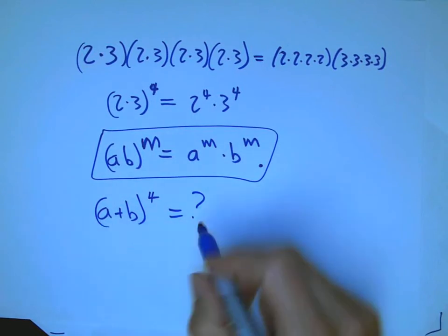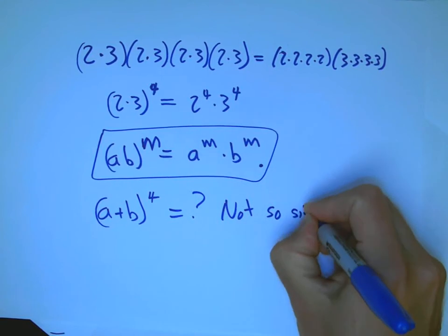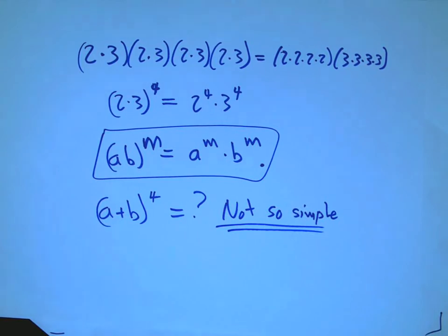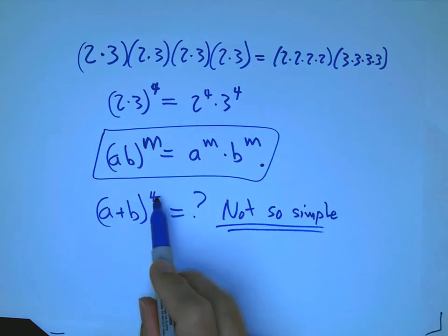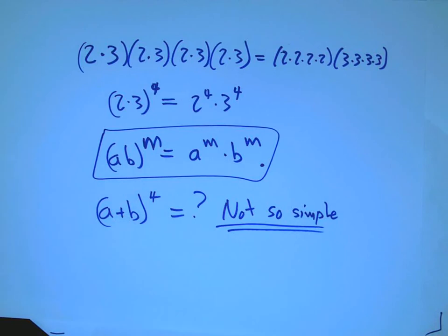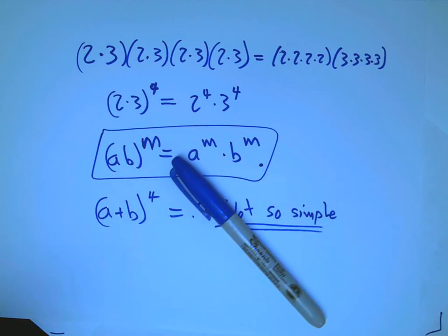What does get complicated is something like (A + B) to the 4th. Is that the same as A to the 4th plus B to the 4th? The answer is: not so simple. We'll want to understand that at some point, but it's not straightforward — because this involves repeated multiplication mixed with addition. That's about how multiplication and addition interact, which is a little more complicated.